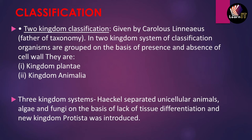The three-kingdom classification was given by Haeckel. He separated unicellular organisms like algae and fungi on the basis of lack of tissue differentiation — meaning they don't have complex or different kinds of tissue. A new kingdom, Protista, was introduced by Haeckel, making it a three-kingdom classification.